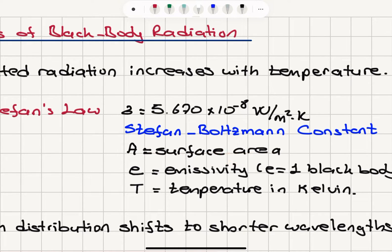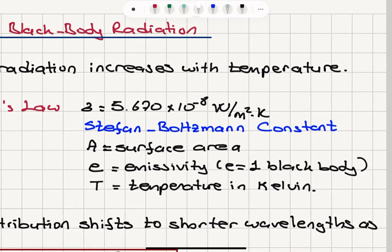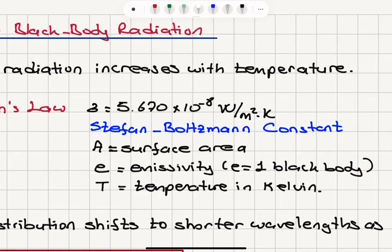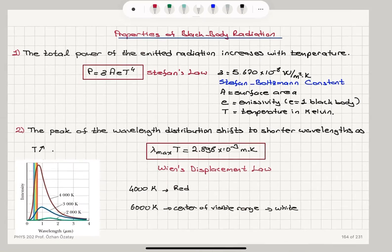Area is the surface area. E is the emissivity. As I said, it's equal to 1 for black body. And T is our absolute temperature in Kelvin.